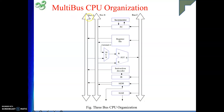In our case it is a three-bus CPU architecture. The first bus is called bus A, bus B, and bus C — these are just names. We have internal components present here. The first component, well known to us, is the program counter. Program counter content can be placed on bus B. This is the design we need to understand.